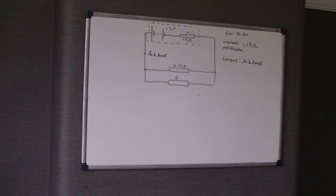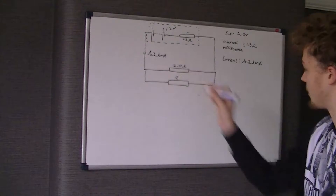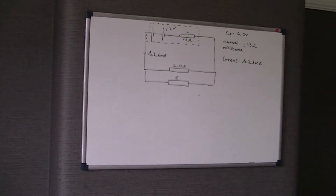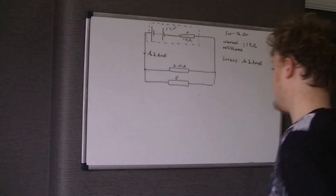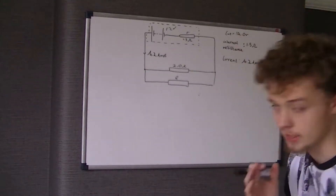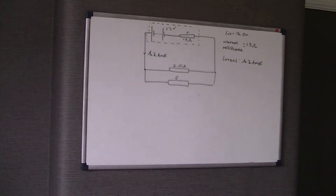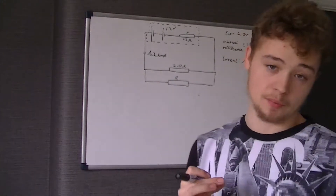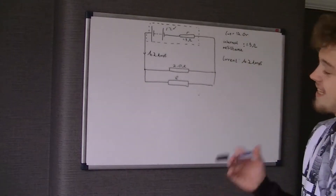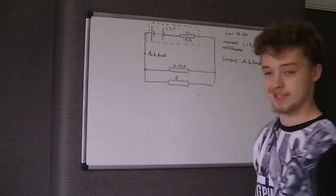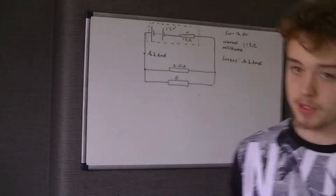The first question gets you to understand circuit theory. You need to understand EMF and the fact that current is split across the 2-ohm resistor and the single resistor R, and that the potential difference across parallel resistors is the same. Those are the two key bits of information needed to answer this question.